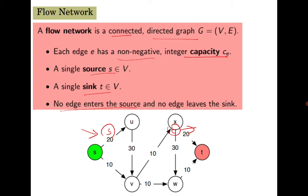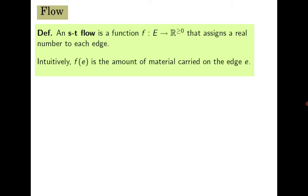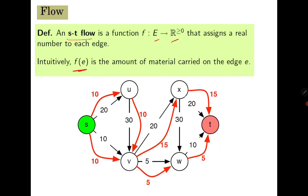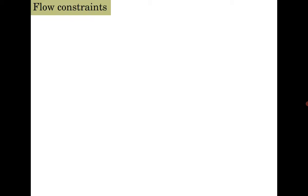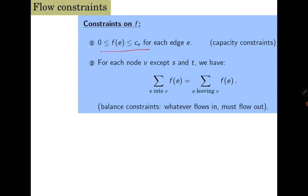An s-t flow is a function from the set of edges to the real numbers, where we assign a real number to each edge, denoted f(e). The numbers in black with black edges represent the given flow network, and the red numbers with red edges represent the flow — capacities in black, flow in red. To guarantee the existence of a solution, we impose constraints. The first obvious constraint is that the flow cannot exceed the capacity.